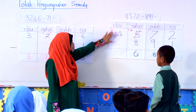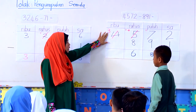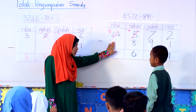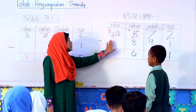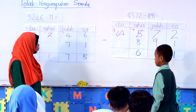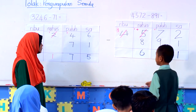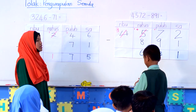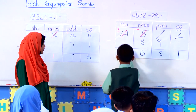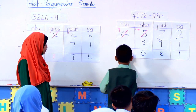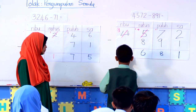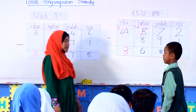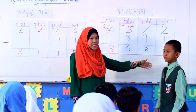Selepas tu, apa berlaku pada nilai ribu ni? Ada benda yang nak ditolak tak di bawah ni? Tak ada. Kalau tak ada, apa yang kamu perlu buat? Tulis sahaja nombor 3 di bawah. Tahniah, terima kasih Zuhafizi.